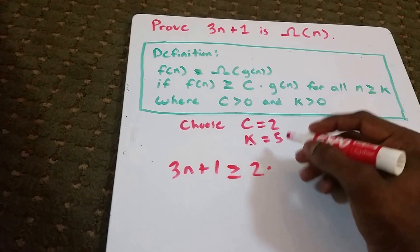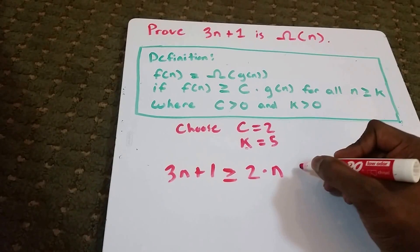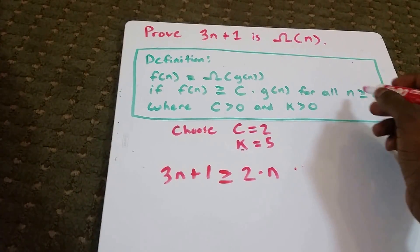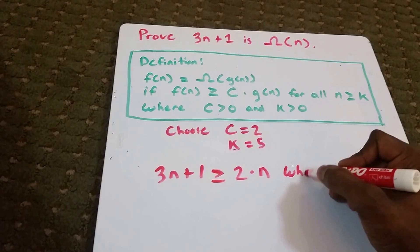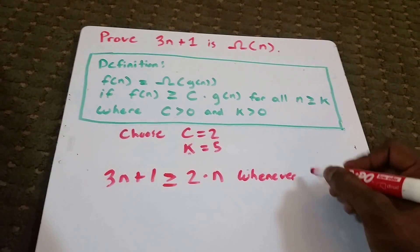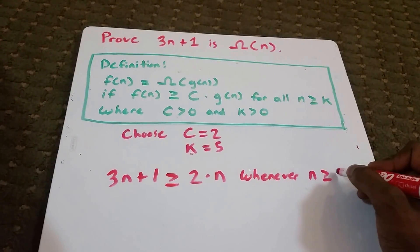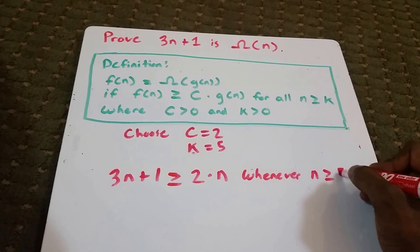times our g of n, which is n. I have for all n greater than or equal to k, but it may be better to see it as whenever n is greater than or equal to our K value, which is 5.